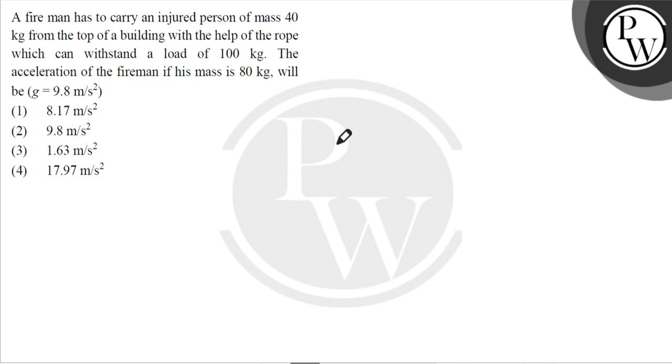The acceleration of the fireman if his mass is 80 kg will be: number 1, 8.17 meter per second square; number 2, 9.8 meter per second square; number 3, 1.63 meter per second square; and number 4, 17.97 meter per second square.